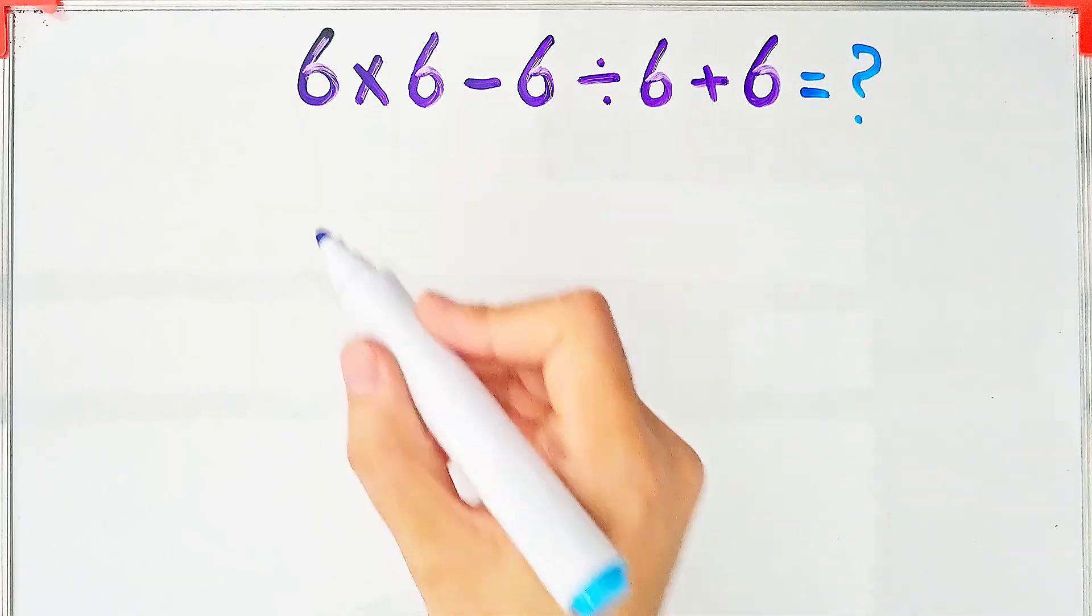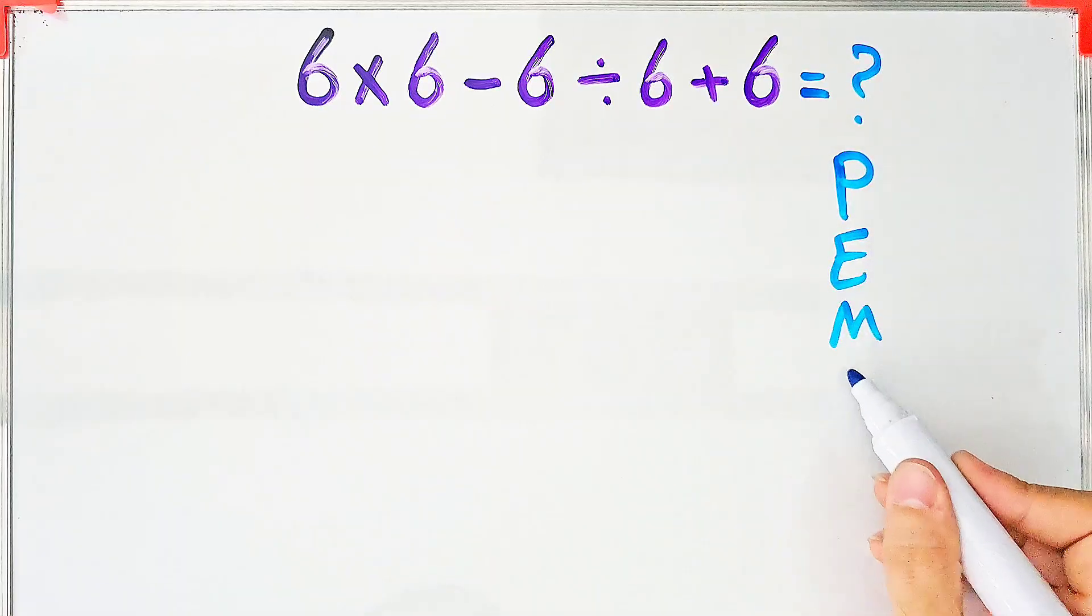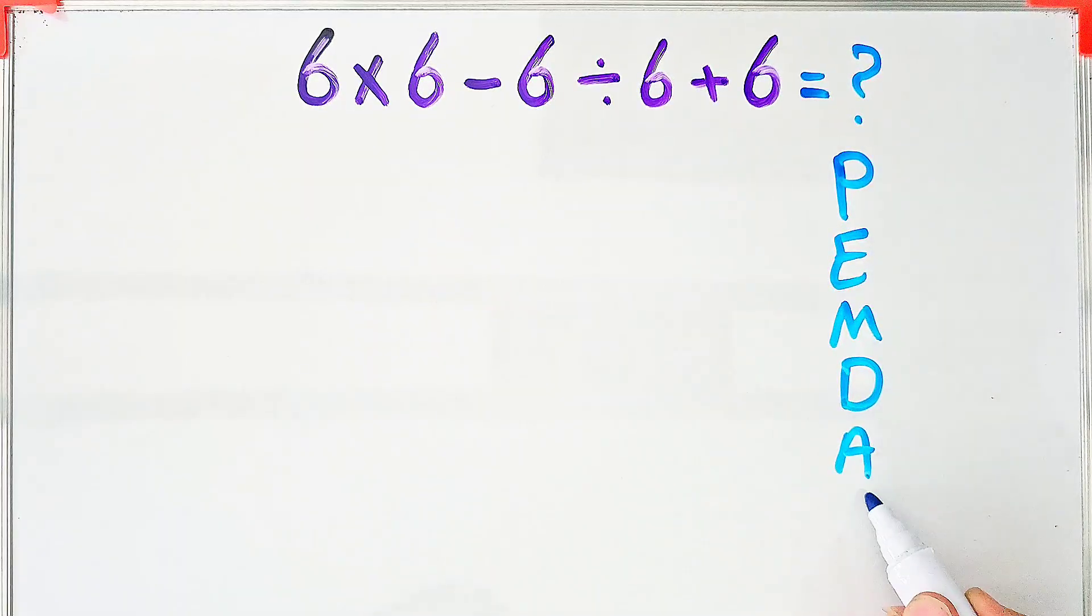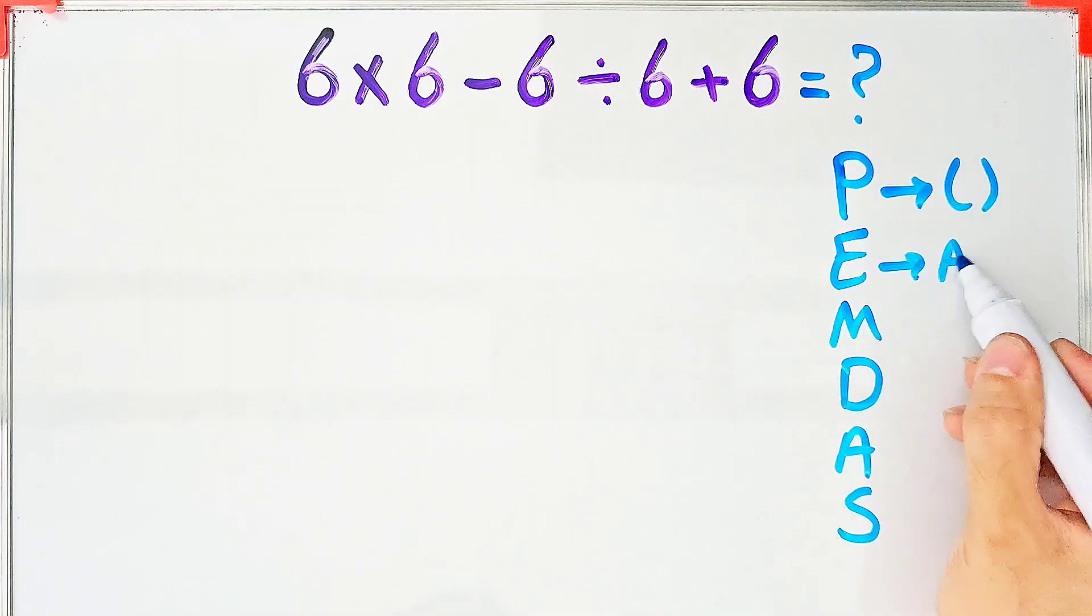To solve this question we need to follow the order of operations, which is PEMDAS. PEMDAS shows the priority of the mathematical operations. If you don't pay attention to this rule you get the wrong answer. P stands for parentheses, E stands for exponent, M stands for multiplication.